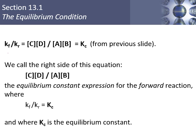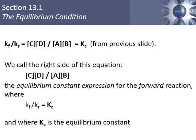Kc, where C is for concentration, equals products over reactants — C times D raised to their respective coefficients (which are 1 here) over A times B. We call the ratio the equilibrium constant expression, and we call the numerical value the equilibrium constant.